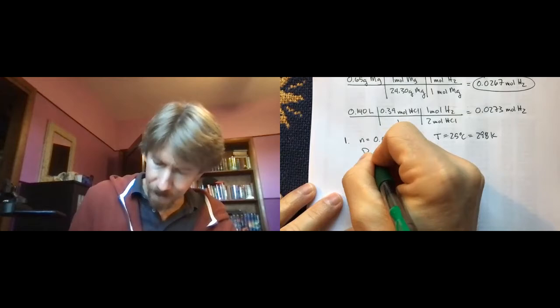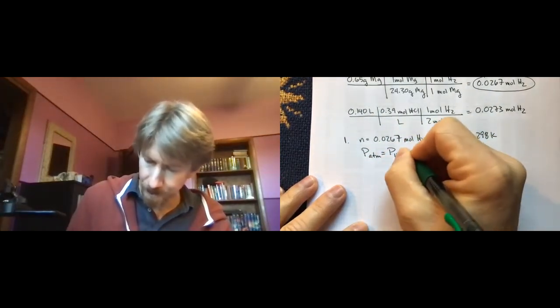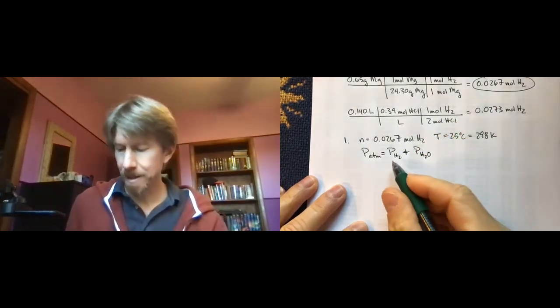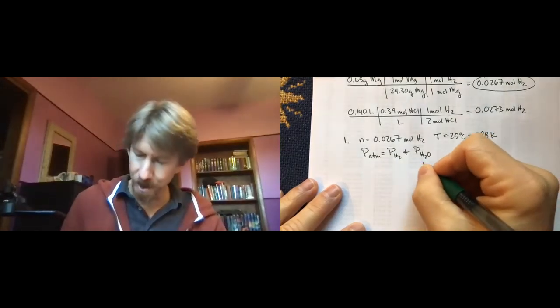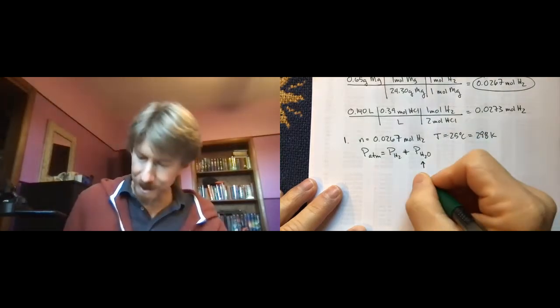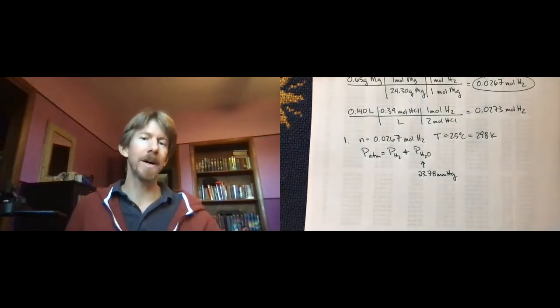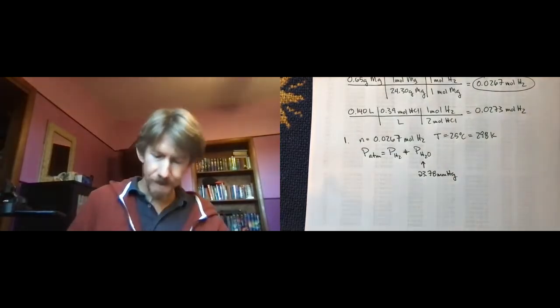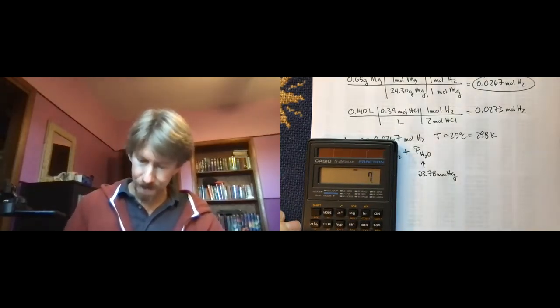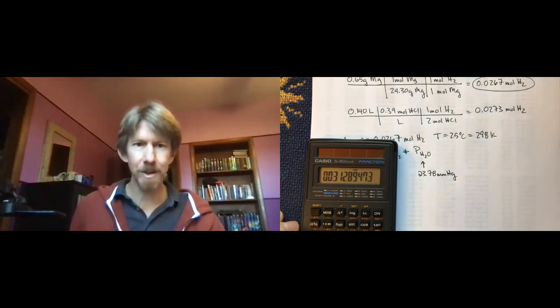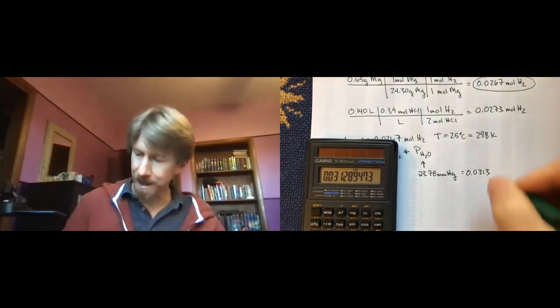We know our atmospheric pressure. And we know that our gas is collected over water. So we know that the partial pressure of the hydrogen is actually going to be less by the amount of the vapor pressure of water at 25 degrees Celsius. We can look at our table on our conversion and equation sheet and find that the partial pressure of, or the vapor pressure of that temperature is 23.78 millimeters of mercury. Which gives me 0.0313 atmospheres because I divided it by 760.